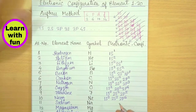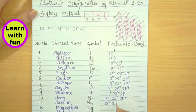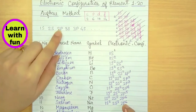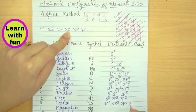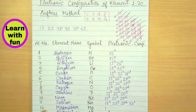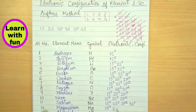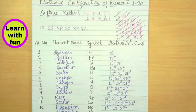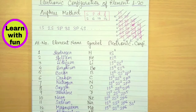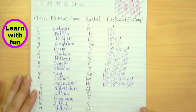Sodium has 11 electrons: 1S2, 2S2, 2P6 accounts for 10 electrons, and the 1 remaining electron goes into 3S1. Magnesium has 12 electrons: 1S2, 2S2, 2P6 fills 10 electrons, and the 2 remaining electrons go into 3S2. This is how the electrons fill for magnesium.